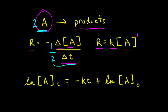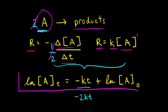If our balanced equation had a 2 as a coefficient in front of our reactant, we would have had to include a one-half as a stoichiometric coefficient. When we set our two rates equal to each other and go through the calculus, instead of getting negative kt we would have gotten negative 2kt. However, for our reaction we have a coefficient of 1, and therefore we can use this form of the integrated rate law.